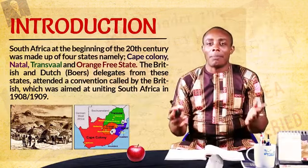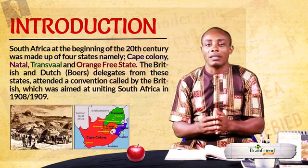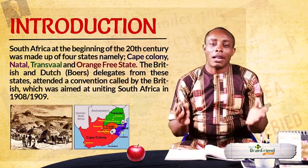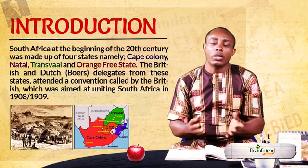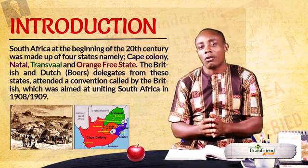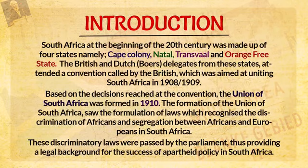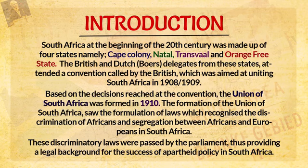When you come across apartheid, one thing that should come to your mind is South Africa because apartheid was practiced in South Africa. At the beginning of the 20th century, South Africa was made up of four states as you can see on the map. The states were the Cape Colony and Natal — these two were British colonies — and then Transvaal and Orange Free States, which were colonies controlled by the Boers or the Dutch.